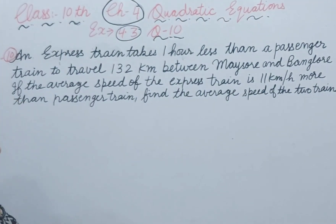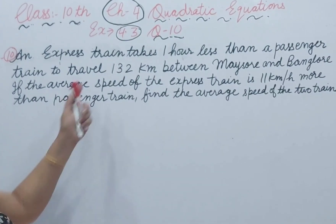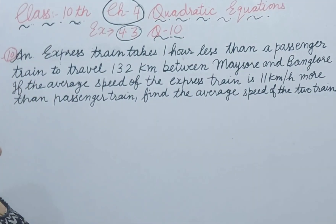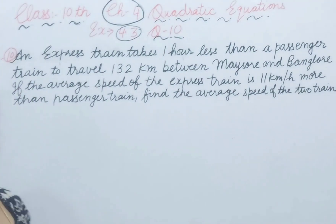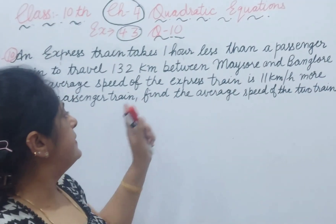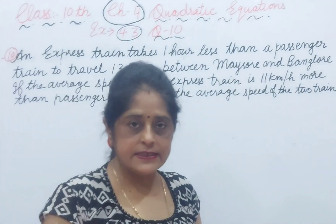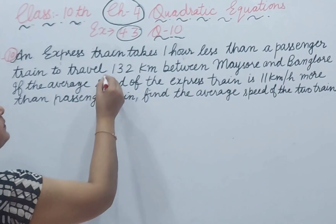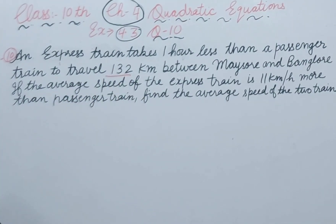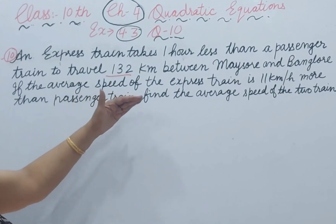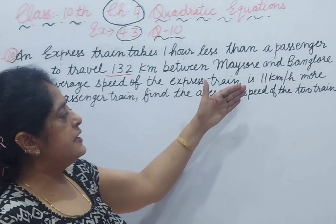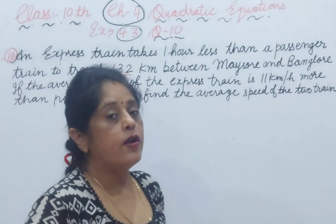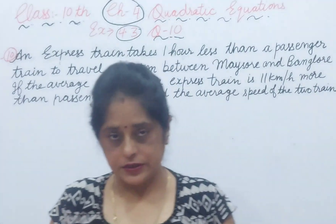An express train takes one hour less than the passenger train to travel 132 km between Masur and Bangalore. The express train compared to the passenger train takes 1 hour less to travel 132 km. The average speed of the express train is 11 km per hour more than the passenger train. I will tell you the average speed of the two trains.